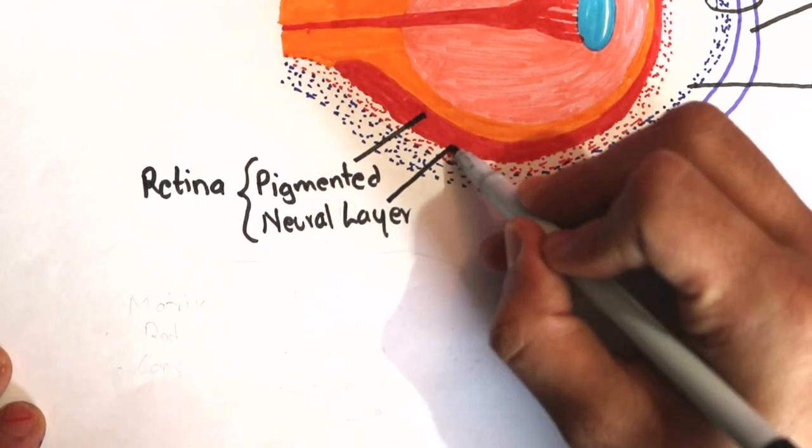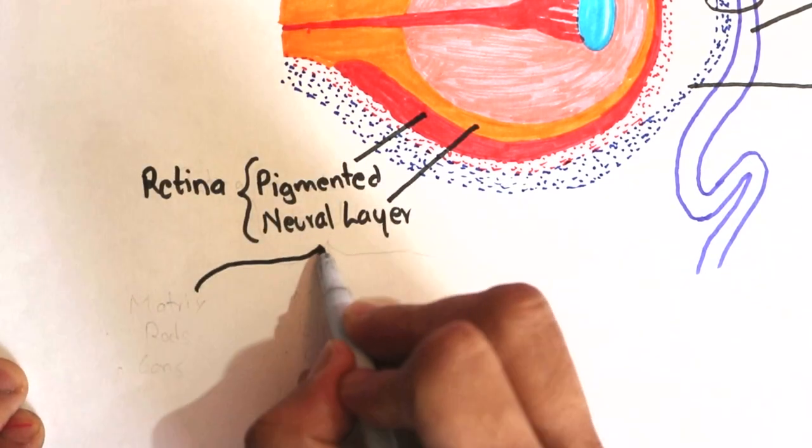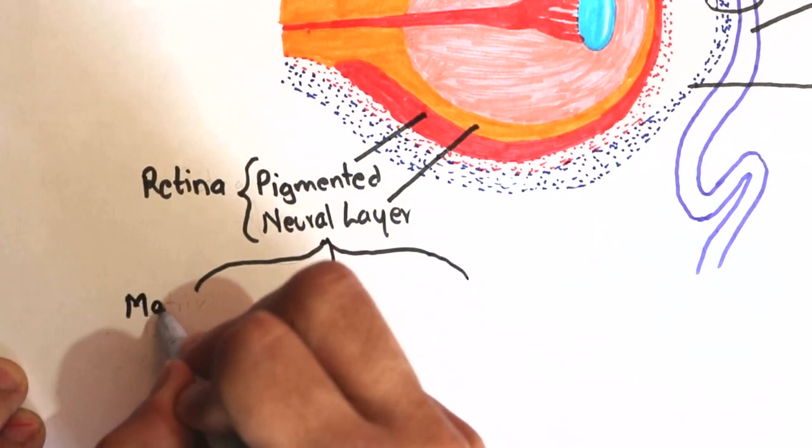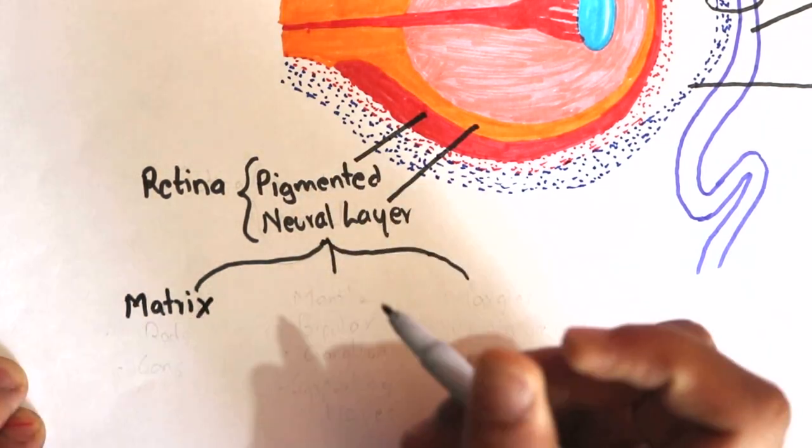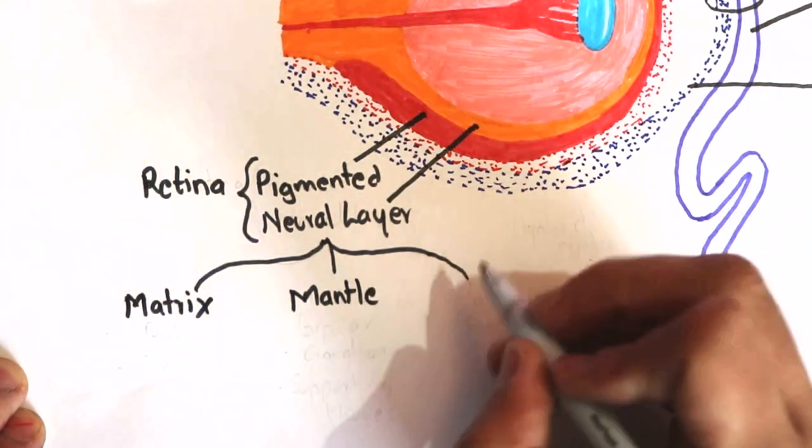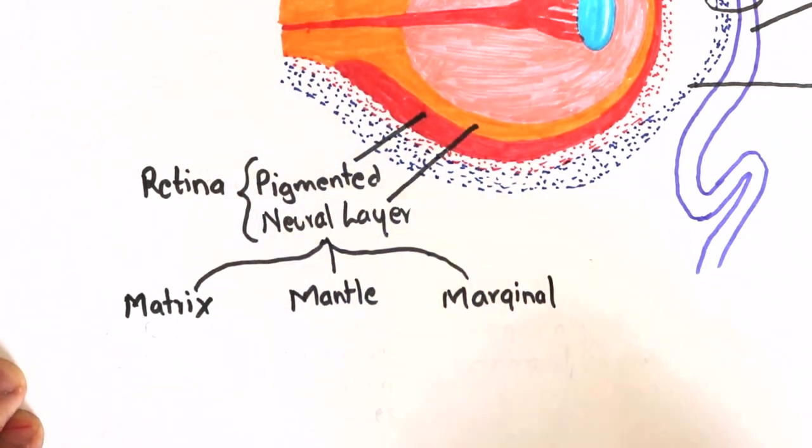The neural part of the retina is derived from the inner wall of the optic cup, colored in orange. Initially, the inner wall of the optic cup is a single layer epithelium. It divides into several layers of cells which differentiate into the following three layers: matrix, mantle, and marginal.